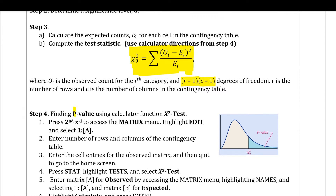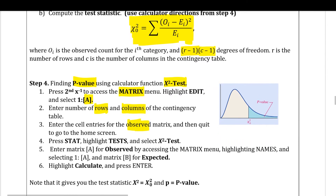Step four: to calculate the test stat and p-value, we go into the matrix menu on the calculator. A matrix is essentially a table; you specify the number of rows and columns, then enter all the observed values. We put that into the calculator, then go to the stat menu, go to test, and select the chi-squared test — not the chi-squared GOF test. Make sure you're using the chi-squared test, available on both TI-83 and TI-84 calculators.